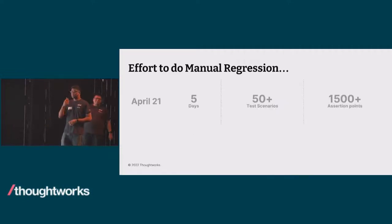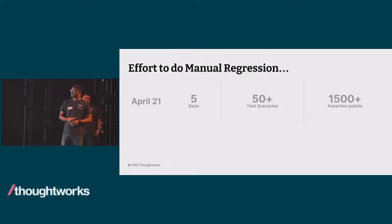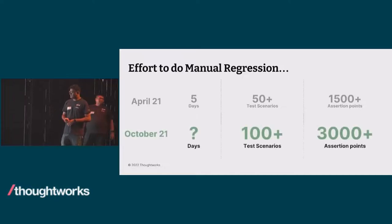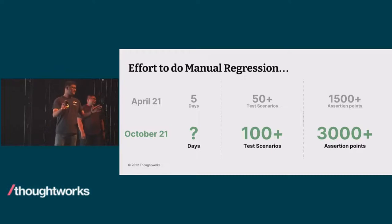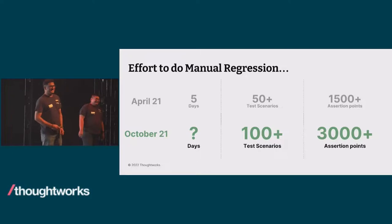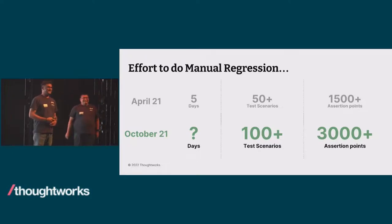In April 2021, it took us five days to test 50-plus test scenarios and 1,500 assertion points. Can you imagine in October 2021, when we had 100-plus test scenarios and 3,000-plus assertion points, how many days we would have taken? I'll ask you to hold that thought for a while.